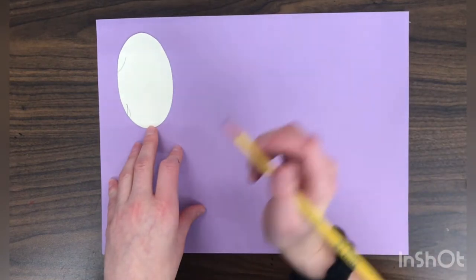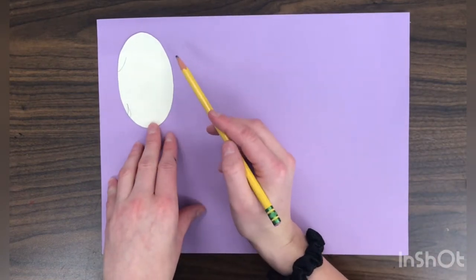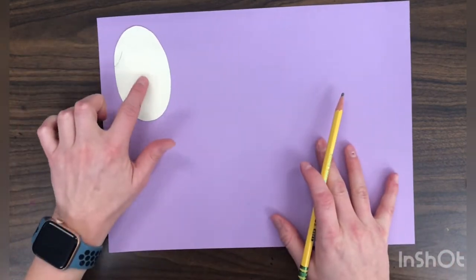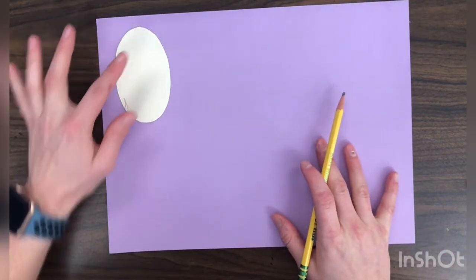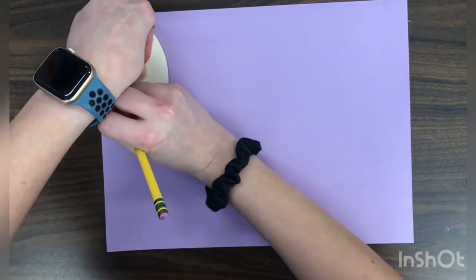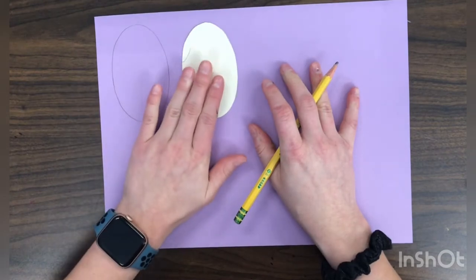And to do that, we're going to give them highlights and shadows. But first, we have to make all the different parts of our balloon dog. So we'll need six ovals. So with your oval tracer, hold it, and with your pencil, just go around and trace it six times.